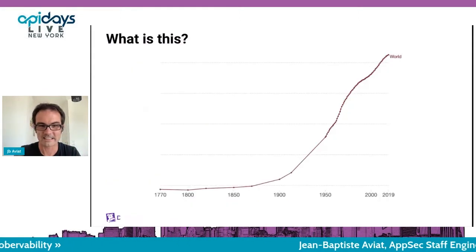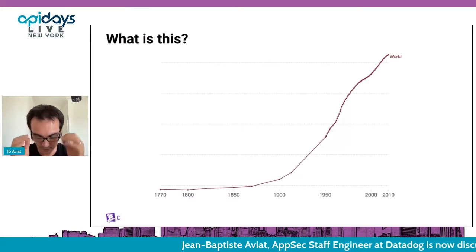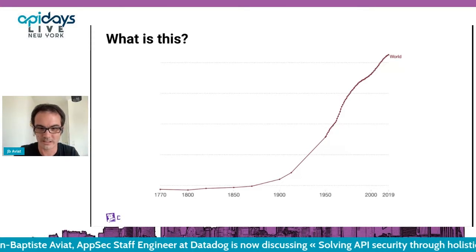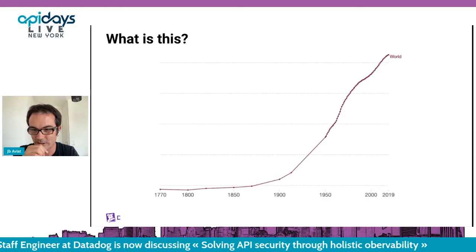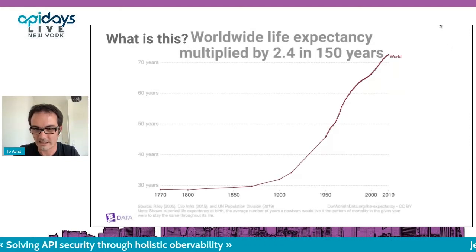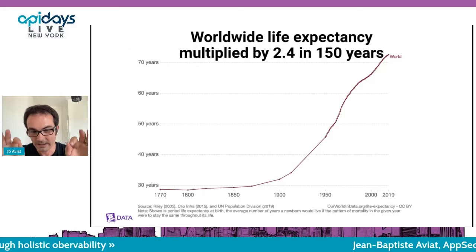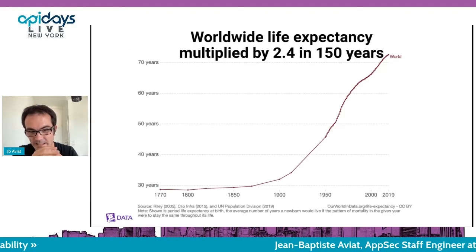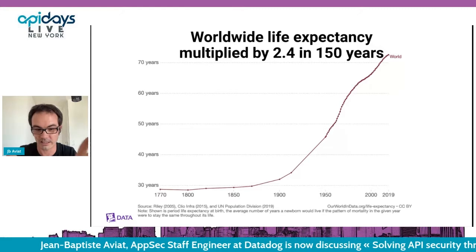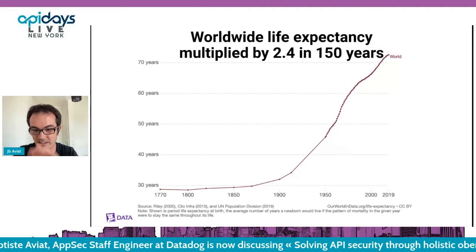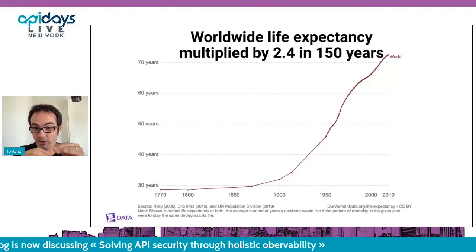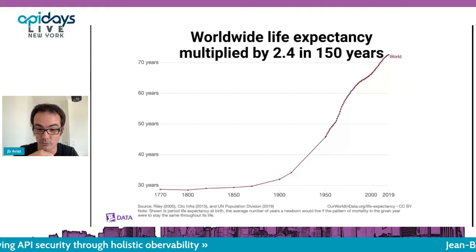Let's dive in. If we were in a physical room, I would ask you to shout out loud: what do you think this is? Feel free to take a guess in the comments. I'm going to give you a hint — that's the world life expectancy. And it was multiplied by 2.4 in 150 years. So you read that correctly: about 150 years ago, your average age of death would be under 30 years old, and now it's over 72 years.